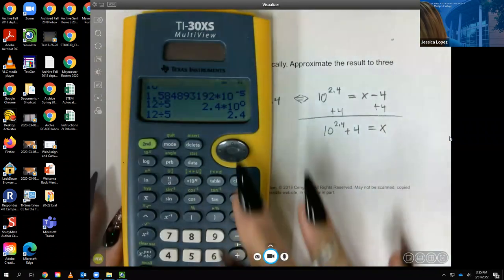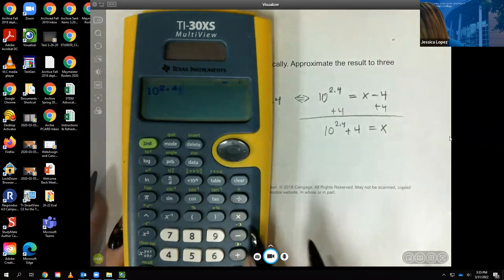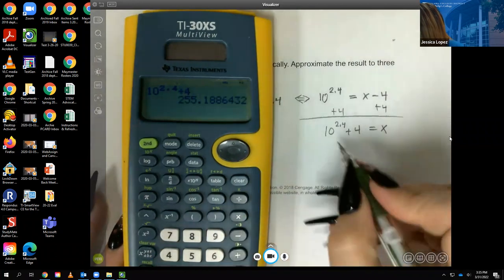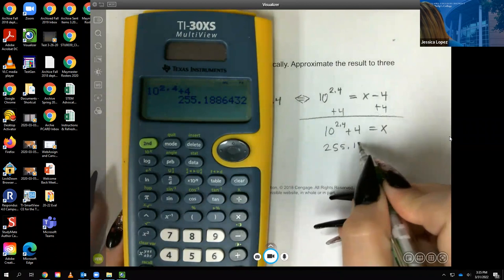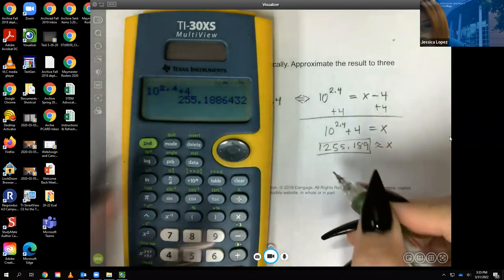Let's see what that is. 10 raised to the 2.4 plus 4 is 255.189. And that is the result there.